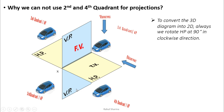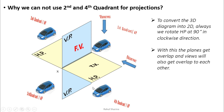When you rotate HP 90 degrees clockwise in the first quadrant, the top view goes down and VP remains straight — no overlap. But in the second quadrant, rotating HP 90 degrees clockwise causes HP to overlap with VP, meaning the top view overlaps with the front view. In the third quadrant, HP goes above — no overlap. In the fourth quadrant, the same overlap problem as the second occurs.